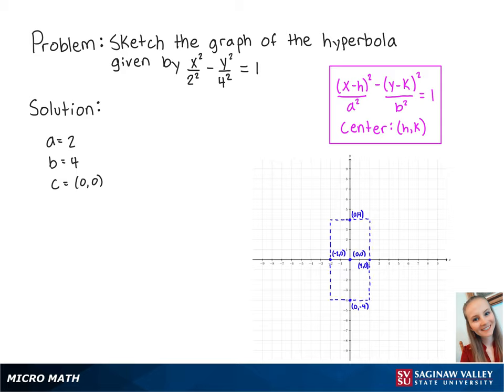The asymptotes of the hyperbola are the diagonals of this rectangle. So the first asymptote is the line y equals 2x, and the second asymptote is the line y equals negative 2x.